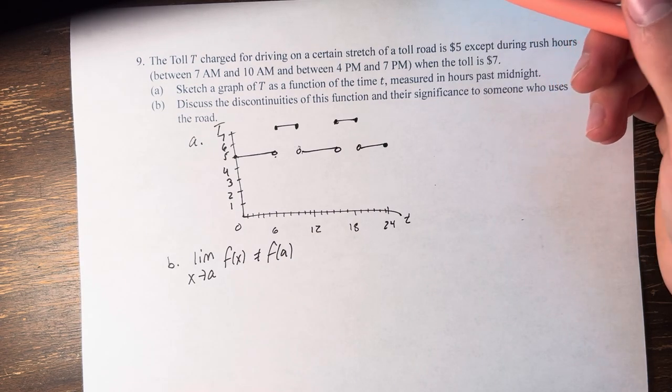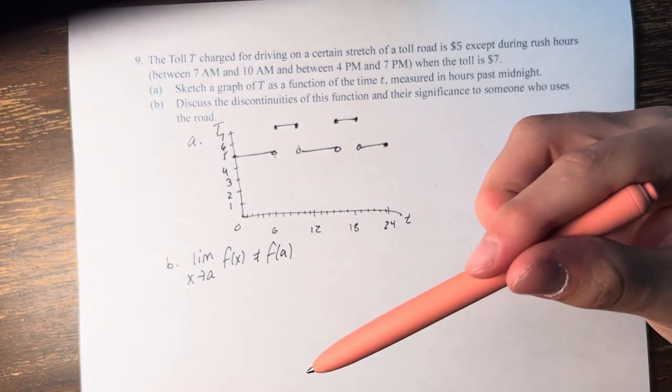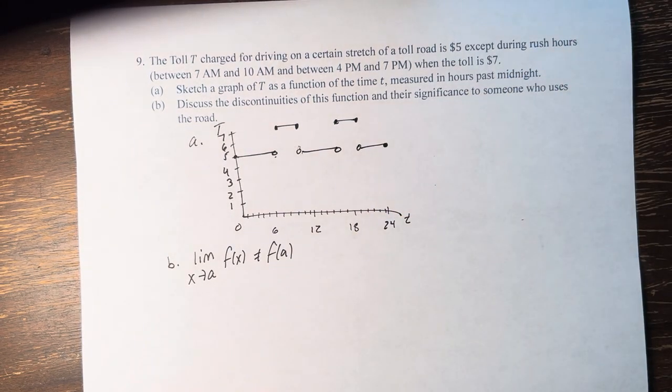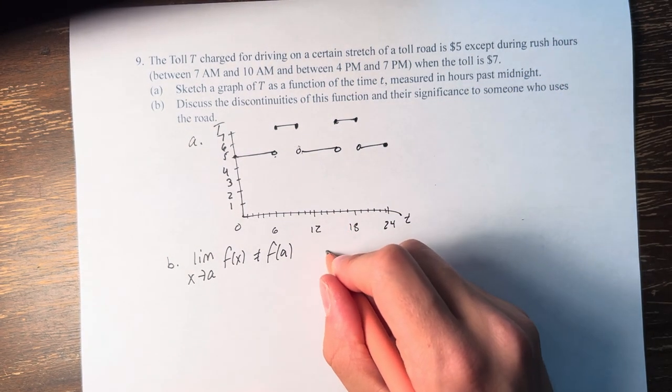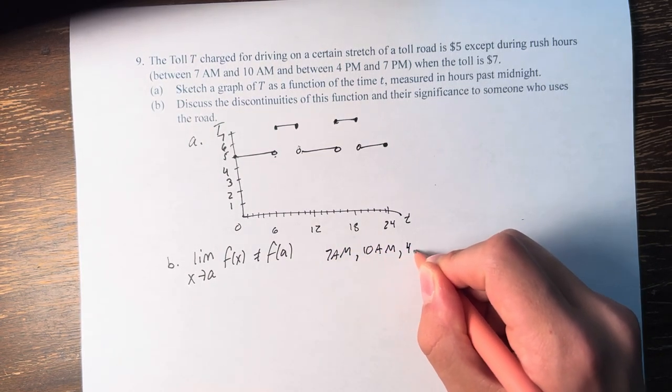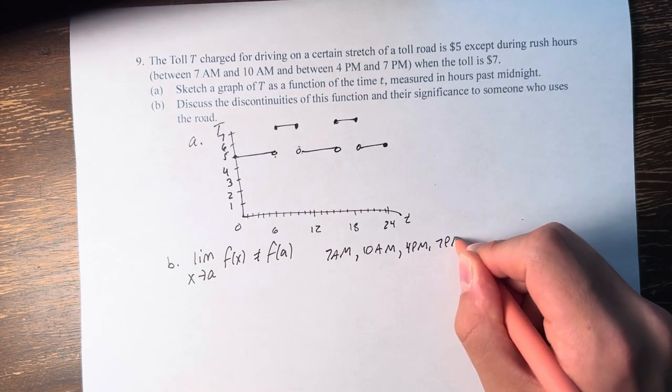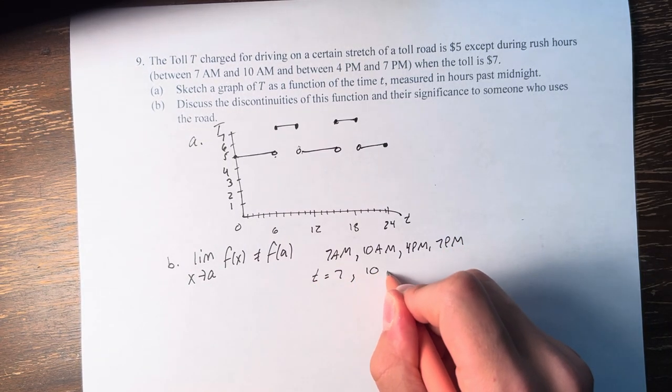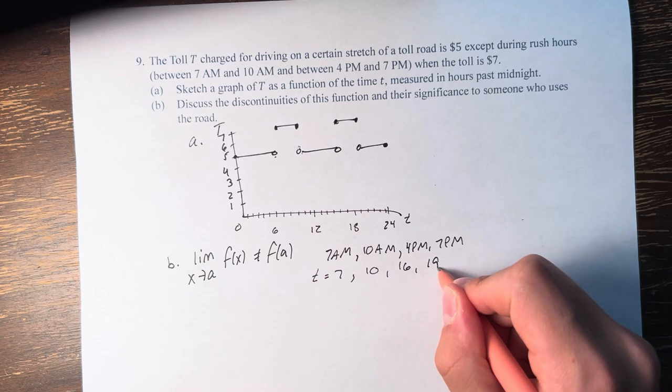These discontinuities are at the switching points between rush hour and not rush hour. So that is at 7 a.m., 10 a.m., 4 p.m., and 7 p.m. So that's lowercase t equals 7, 10, 16, and 19.